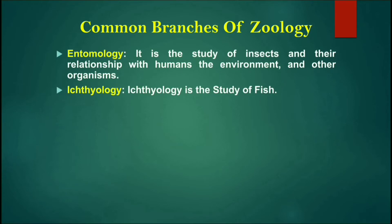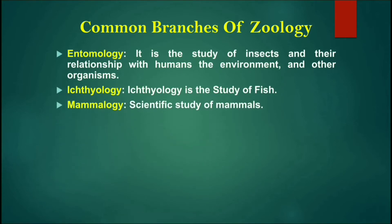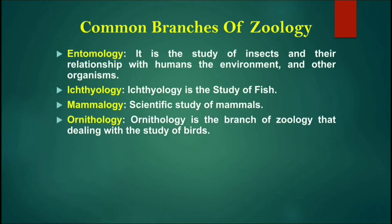Next is Mammalogy — as you can understand by the name, Mammalogy is the science that studies mammals. Next, Ornithology is the study of birds. It's called Ornithology because 'Orni' means birds in Greek.